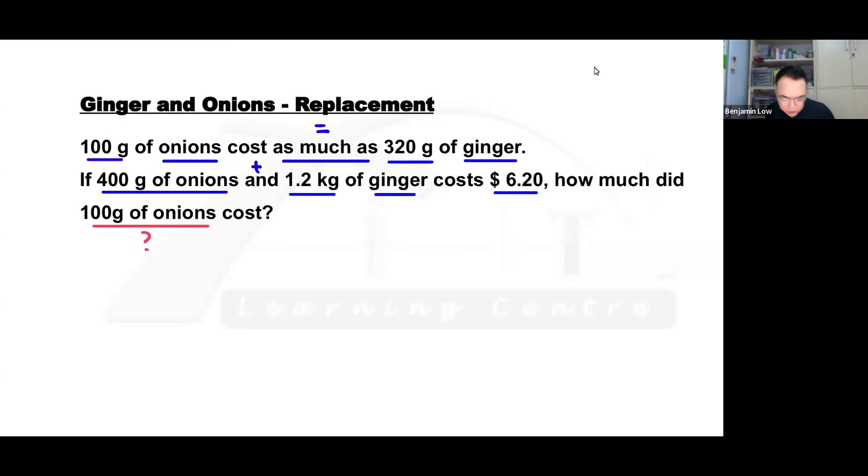In this question, they are telling you that 100 grams of onions have the same price as 320 grams of ginger. And over here, they tell you that this is grams and this is kilograms. One of the key things in mathematics is to make sure that you have the same units. So convert 1.2 kilograms into grams. You can also do it the other way around, but it just makes the question harder because you're going to have decimals.